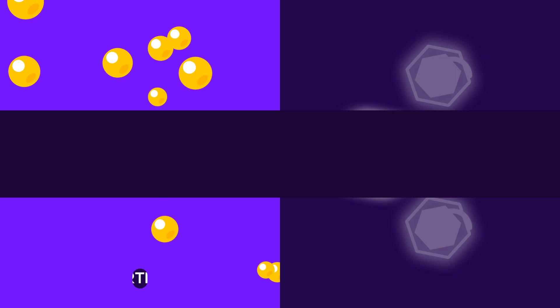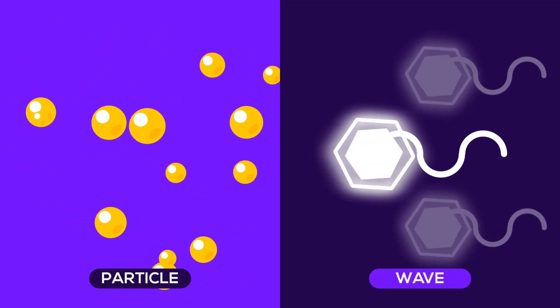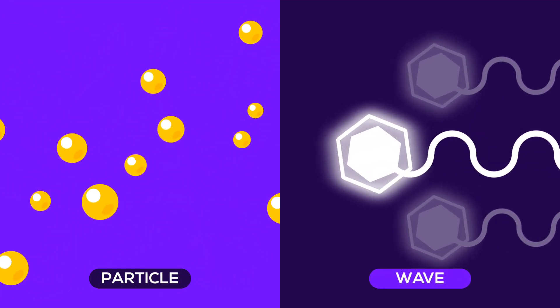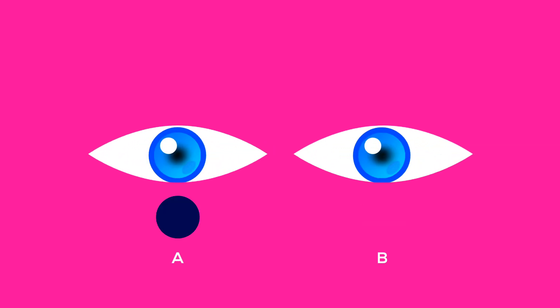A key principle of quantum theory is wave-particle duality, which suggests that particles such as electrons and photons can display properties of both waves and particles at the same time. This means they can exist in a superposition, where they occupy multiple positions or possess multiple properties simultaneously, until they are observed or measured.